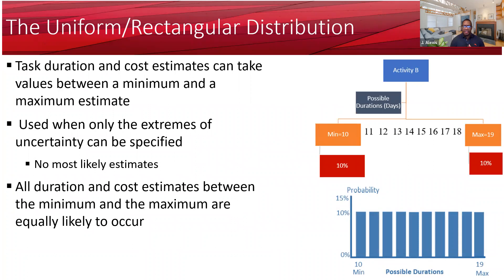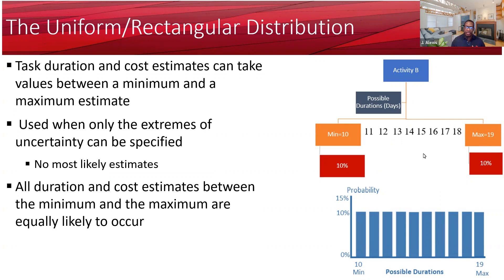Another distribution worth mentioning is the uniform distribution. It is not as popular as the triangular or beta-PERT distributions, but you can use it to model uncertainty in project cost and duration. In this case, you only have a minimum and a maximum, and the chance of hitting any duration or cost between them is equally likely — for example, 10% probability for any value. There is no most likely estimate.